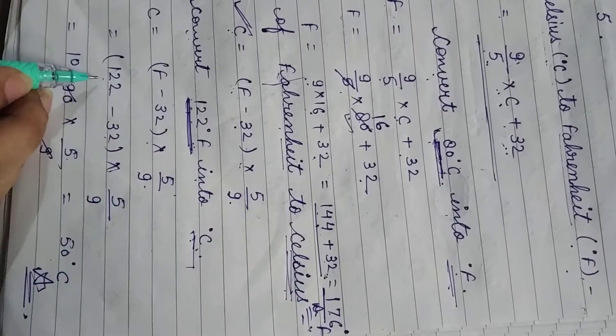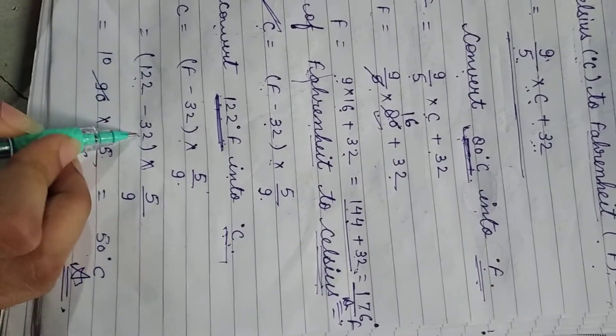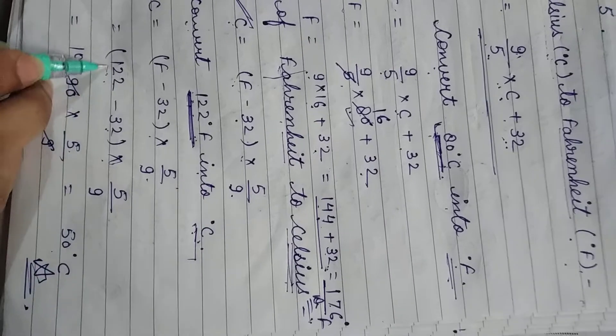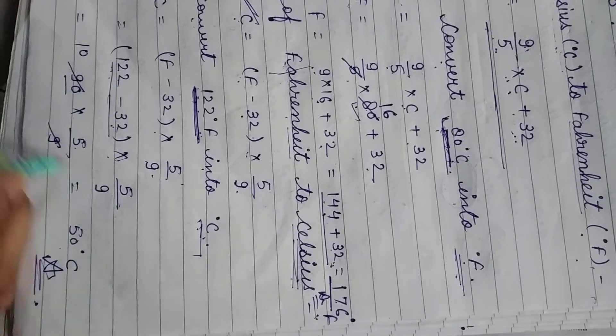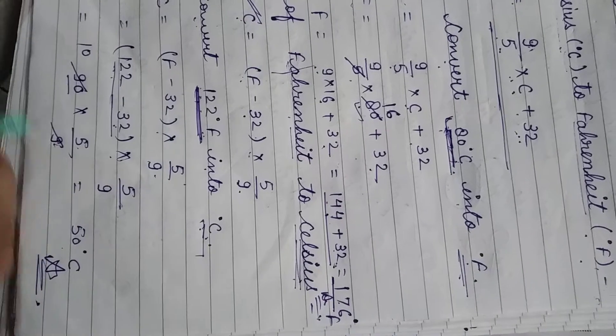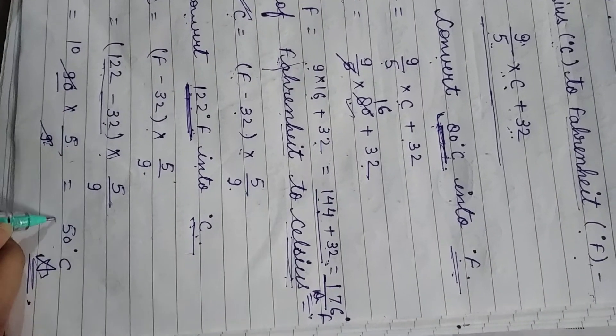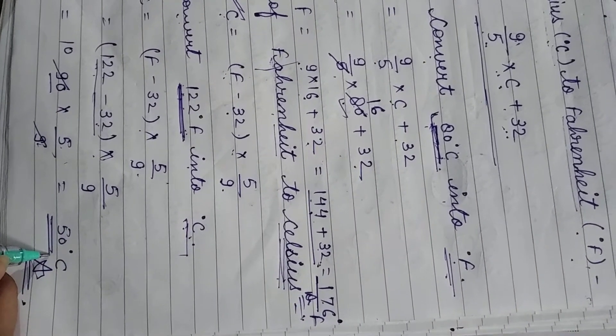Substituting F equals 122, we get 122 minus 32, which gives us 90, into 5 upon 9. Solving this, our answer is 50 degrees Celsius.